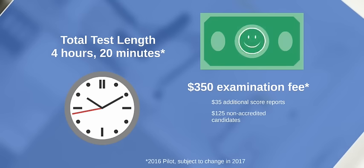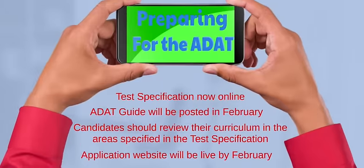It is recommended that candidates select all programs to which they intend on submitting an application. Students should rely on their academic curriculum to review for the test. Available now on the ADA website is the test specification document, which provides the test outline with subjects and number of items per subject. The ADAT guide will be available in February at no cost and will provide a small number of sample questions illustrating the types of questions that will be asked, but will not be a thorough review.